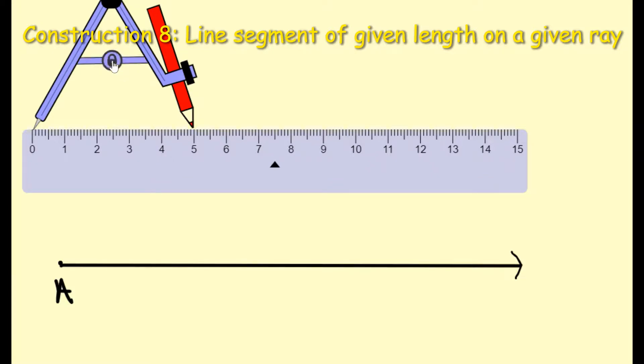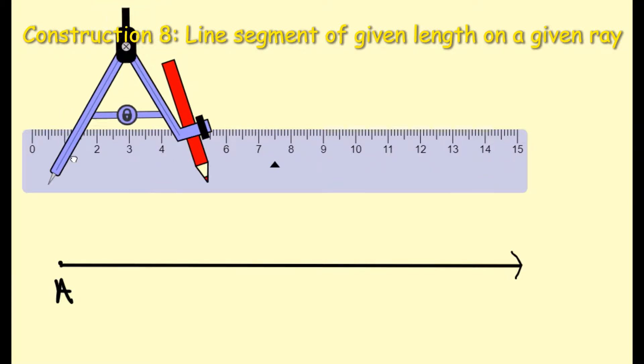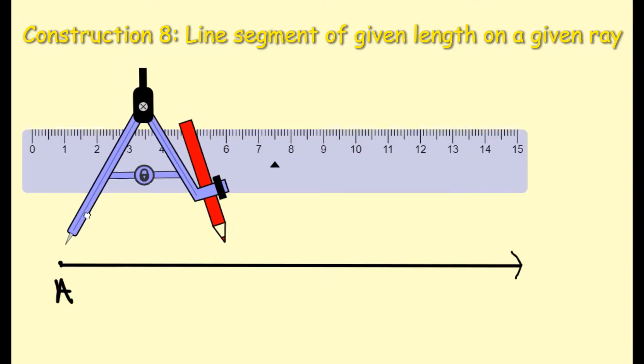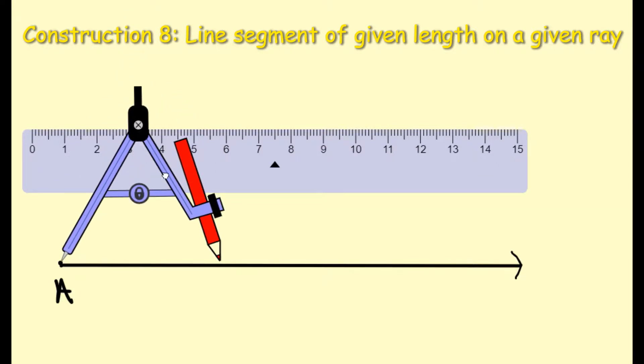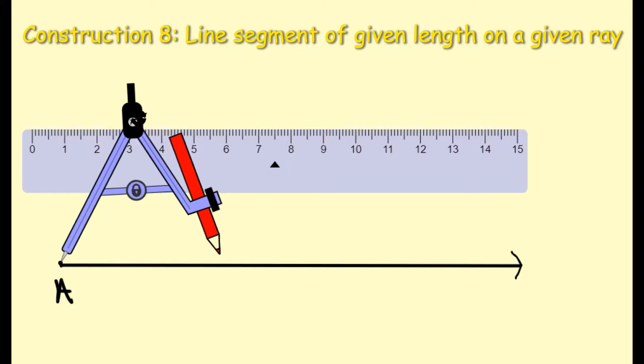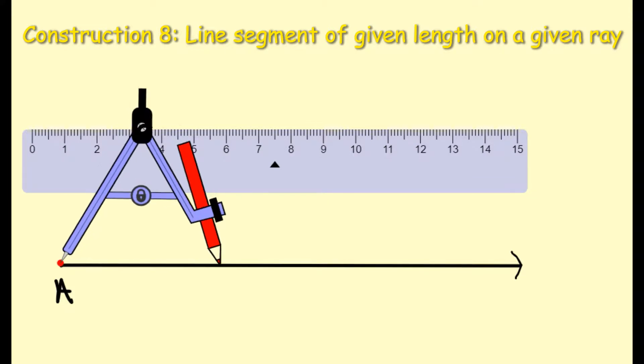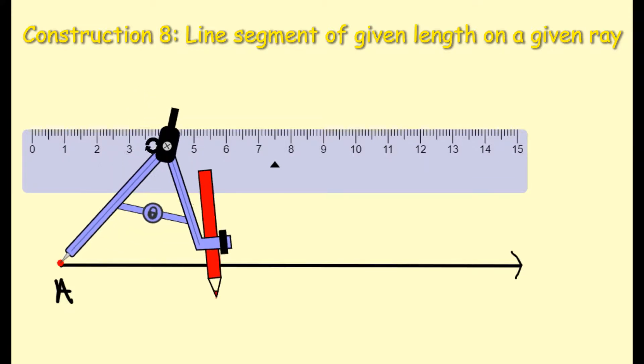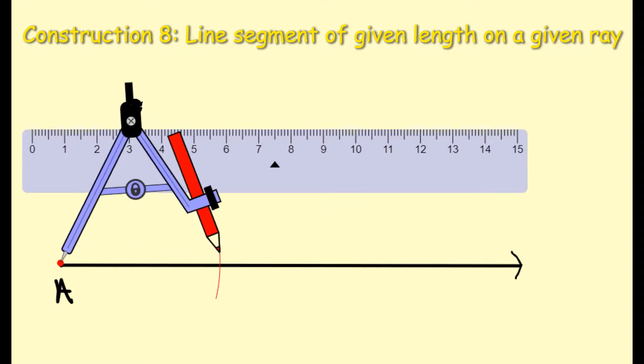Bring the compass down to the ray that you've drawn. Now simply draw an arc on that ray, which we now know is 5 centimeters long. That's basically it.